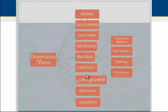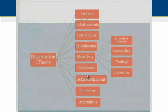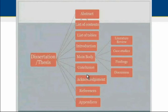In the case of a dissertation or thesis, the format includes an abstract, list of contents, list of tables, introduction, and a main body that may include a literature review, case studies, findings, and discussion, as well as a conclusion, acknowledgements, references, and appendix. We can use this format as a reference since there is not one specific format for theses or journal articles, and it will depend on us to select the appropriate one according to the requirements established to present your work.